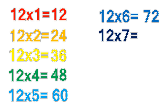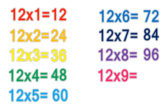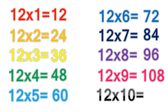12 times 7 equals 84. 12 times 8 equals 96. 12 times 9 equals 108. 12 times 10 equals 120.